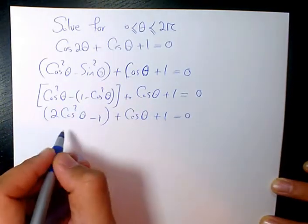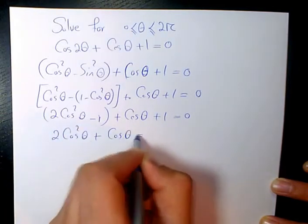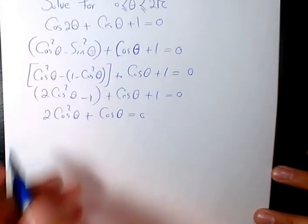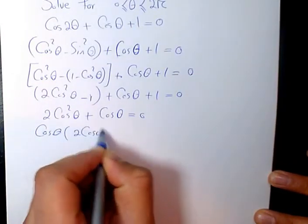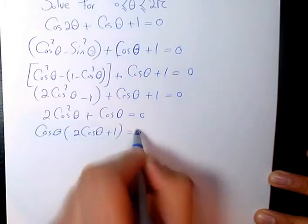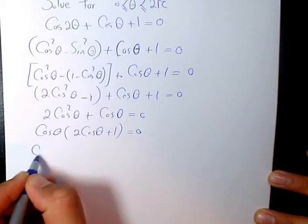1 and negative 1 cancel out. It's going to be 2cos²(θ) + cos(θ) = 0, which factors to cos(θ)(2cos(θ) + 1) = 0. Now we have it in factored form. We have two scenarios.